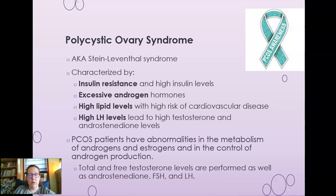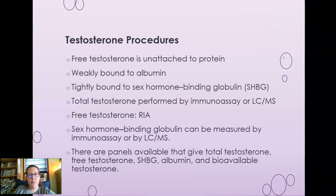Total and free testosterone, androstenedione, FSH, and LH are performed to assess polycystic ovary syndrome. Free testosterone is unattached to protein; testosterone can also be weakly bound to albumin or tightly bound to sex hormone binding globulin. Total testosterone is usually performed by immunoassay or liquid chromatography mass spectrometry. Free testosterone is performed by radioimmunoassay. Panels are available that give total testosterone, free testosterone, sex hormone binding globulin, albumin, and bioavailable testosterone results. DHEA and DHEAS gauge the production of adrenal androgens — both are commonly performed by immunoassay and are used to assess PCOS. The adrenal glands also produce androgens, which is why females can have testosterone levels.